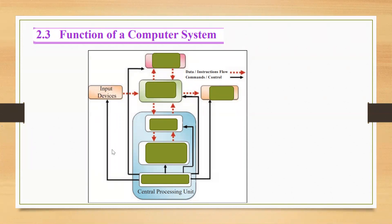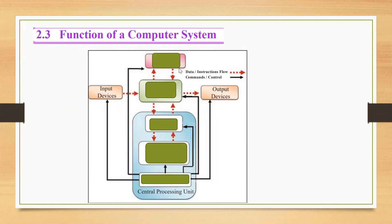Yes. Very good. That is input device. Very good. Next chance — Udan, can you tell me these are the devices we can get some output from. What is that? Output devices. Very good. That is output devices. Now Ashaan — normally we can keep our data and information permanently. What is this? Secondary memory. Very good — secondary storage.